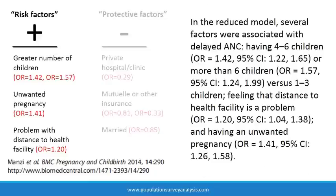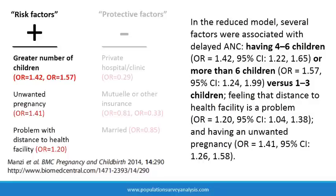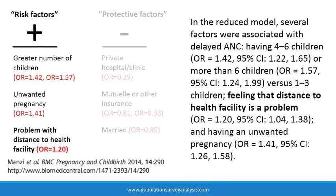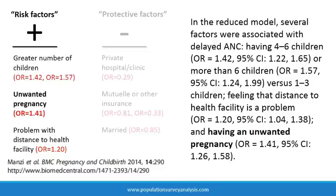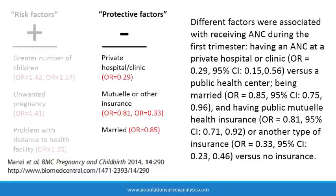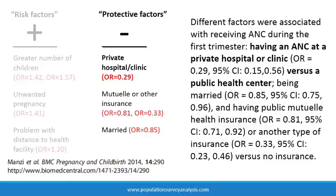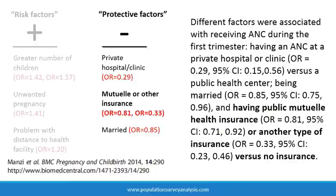These two lists become two sentences in the results section of the paper. Here is the first sentence from the paper. In the reduced model, several factors were associated with delayed ANC. Having four to six children or more than six children versus one to three children, feeling that distance to health facility is a problem, and having an unwanted pregnancy. The second sentence highlights protective factors. Different factors were associated with receiving ANC during the first trimester. Having an ANC at a private hospital or clinic versus a public health center, being married, and having public mutual health insurance or another type of insurance versus no insurance.